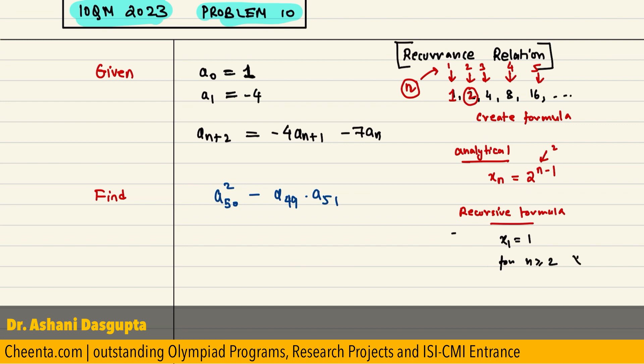xn is equals to 2 times xn minus 1. So, what we say is that every next term is twice the previous term.